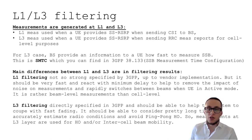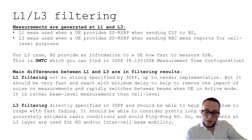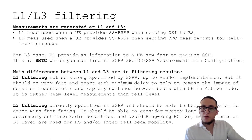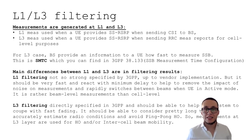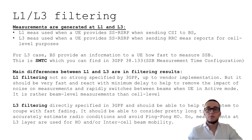Physical layer filtering is not strictly specified by 3GPP and is mainly up to vendor implementation, because it involves beamforming and massive MIMO techniques. It must be very fast to react with minimum delay and help remove the impact of rapid changes in the radio environment, supporting fast beam switches when the UE is in active mode — this is a beam level measurement. Layer three filtering is more directly specified in 3GPP. It must cope with fading but consider a longer time window to ensure confidence in handover decisions and avoid unnecessary ping-pong handovers.